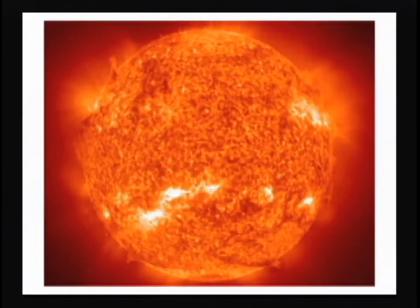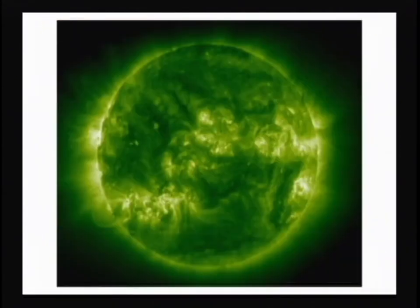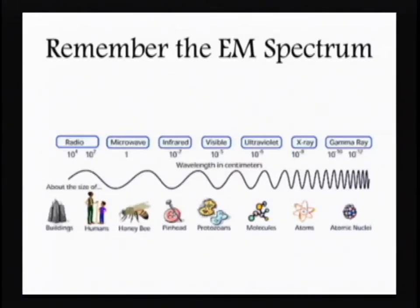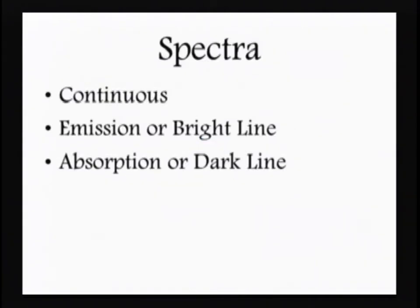You've seen pictures of the sun before. By changing the wavelength of light we observe, we get very different pictures — including x-ray images that show what's going on within the sun. Remember the electromagnetic spectrum. There are three different types of spectra: a continuous spectrum, an emission or bright line spectrum, and an absorption or dark line spectrum.